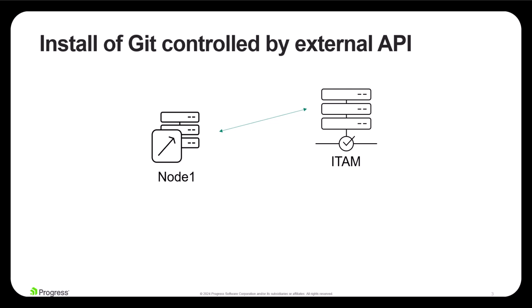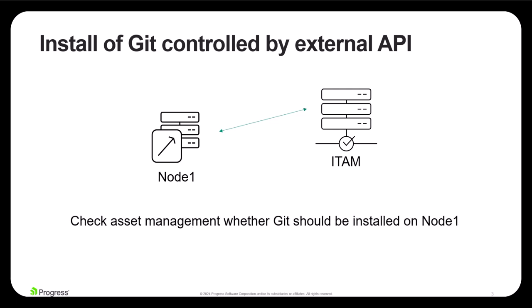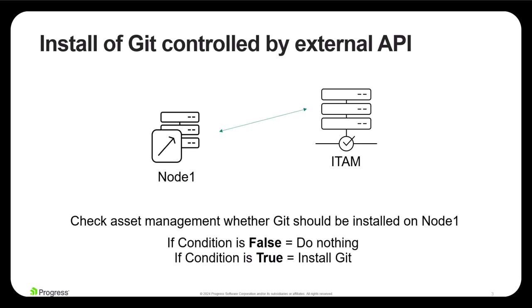This interaction will be achieved through a very simple example of an API request. The Courier job will simply do the API request to the ITAM system to determine whether or not Git is approved. If the condition is set to false, the job will exit. But if the condition is set to true, it will continue with the installation on node 1.